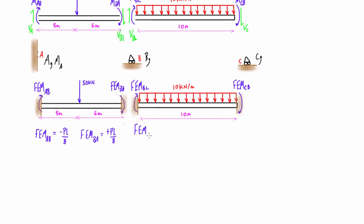And then same thing from the tables, we'd have FEMBC for the left hand case of one with a distributed load, the whole way across, constant distributed load. This would be negative WL squared over 12, and then FEMCB would be from the table just positive WL squared over 12.